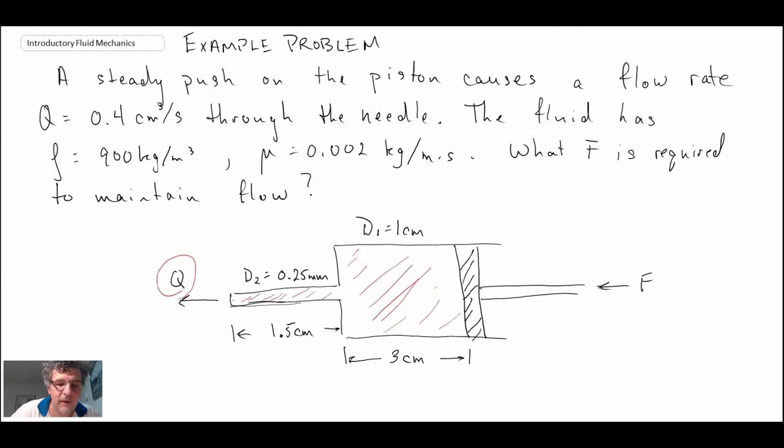To solve this, we are going to determine the pressure drop within the needle section of the syringe. We will apply the energy equation and use the pressure drop from the energy equation. We will refer to this as section 1 and where the fluid is coming out is section 2. We will assume that P₂ is atmospheric pressure that the fluid is going into.